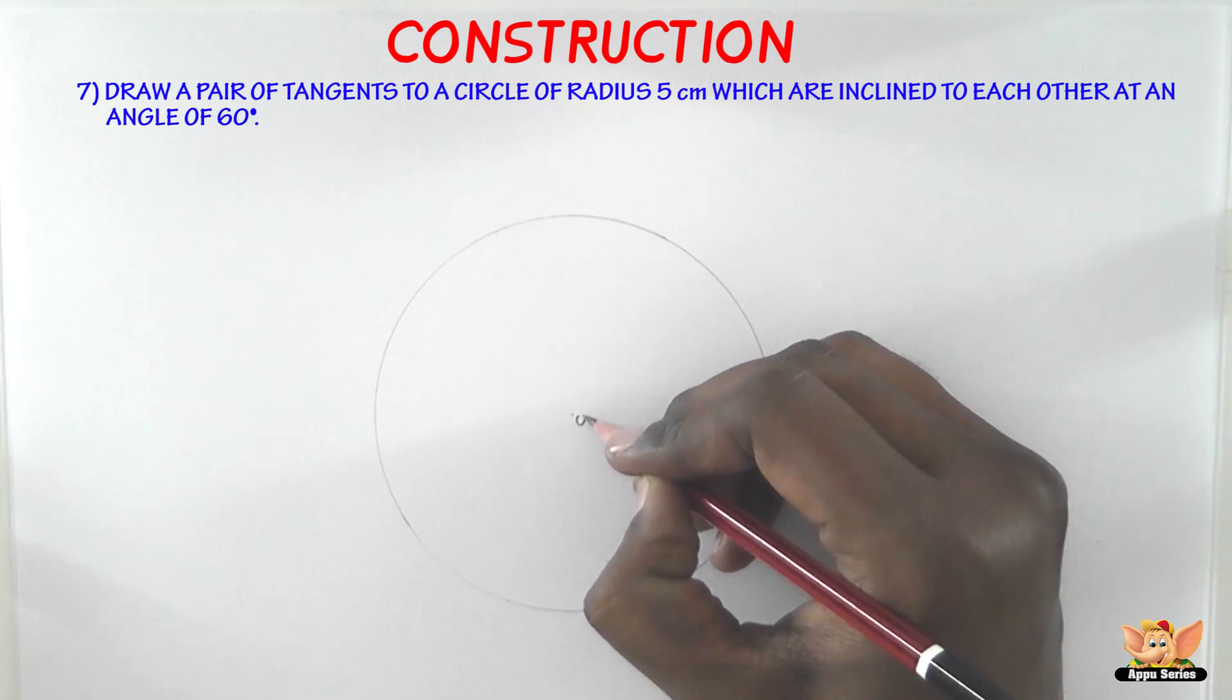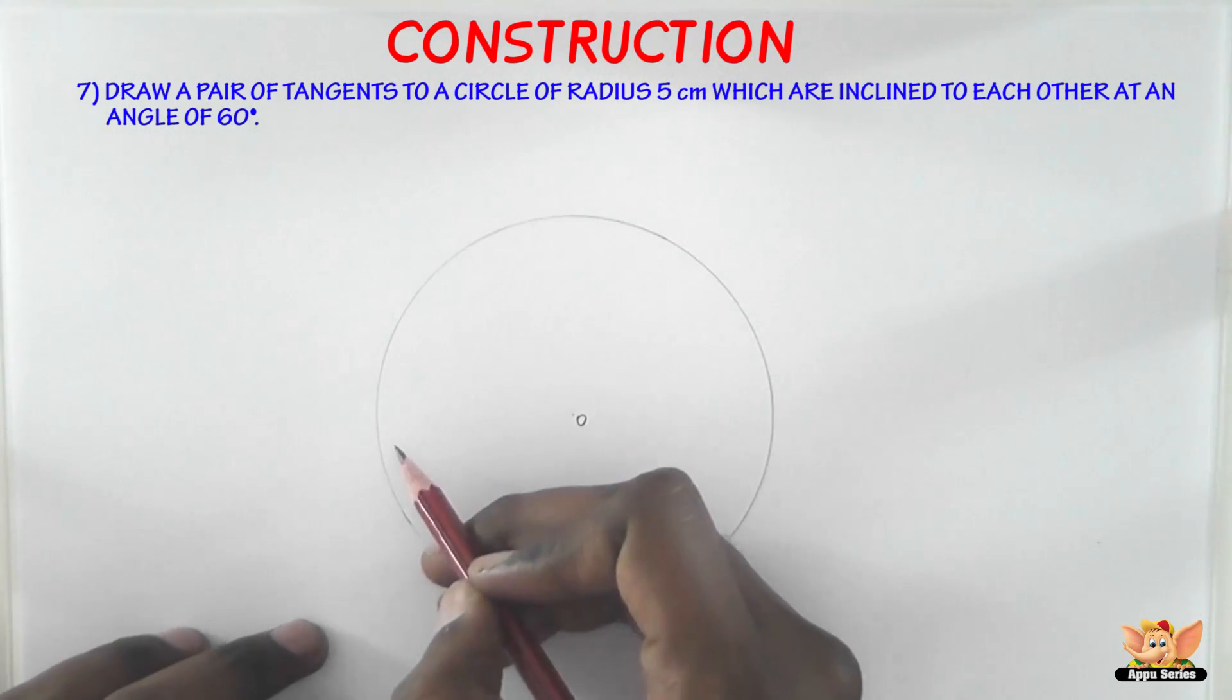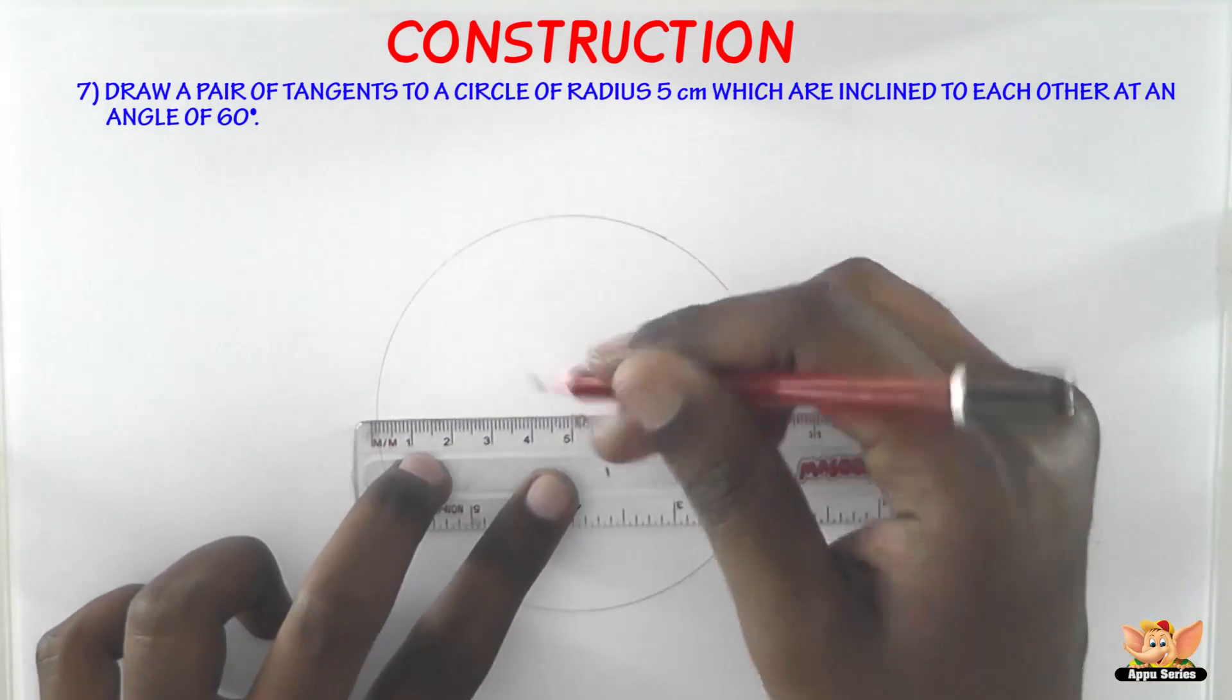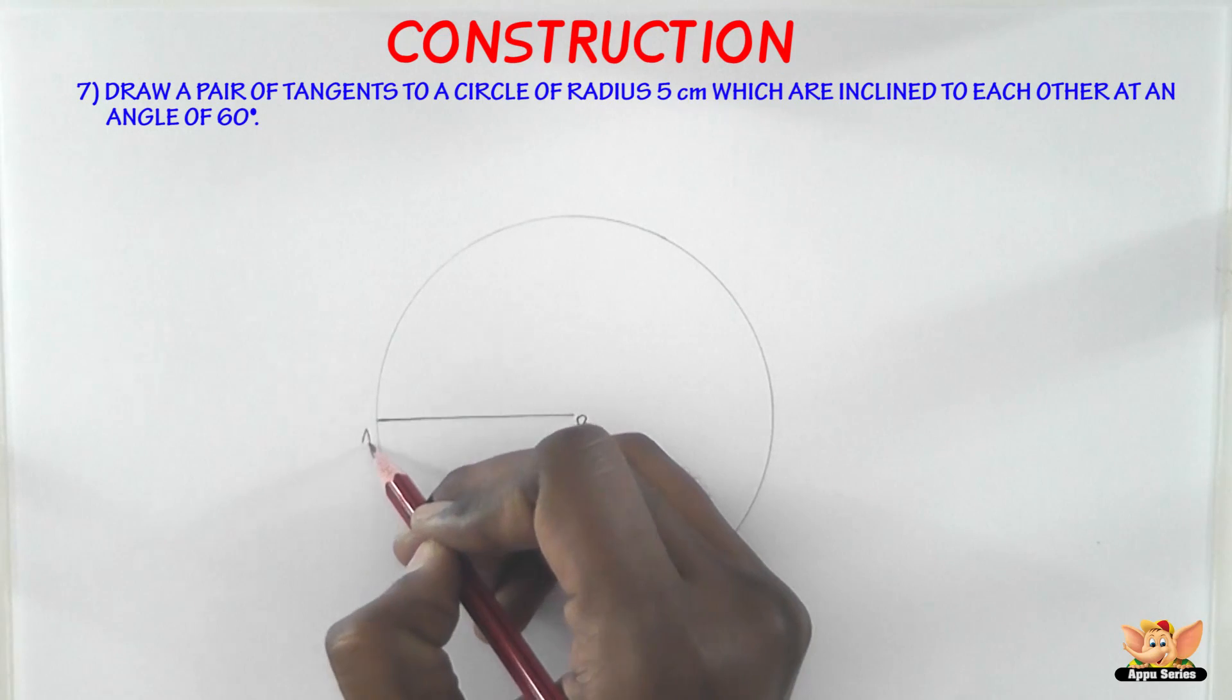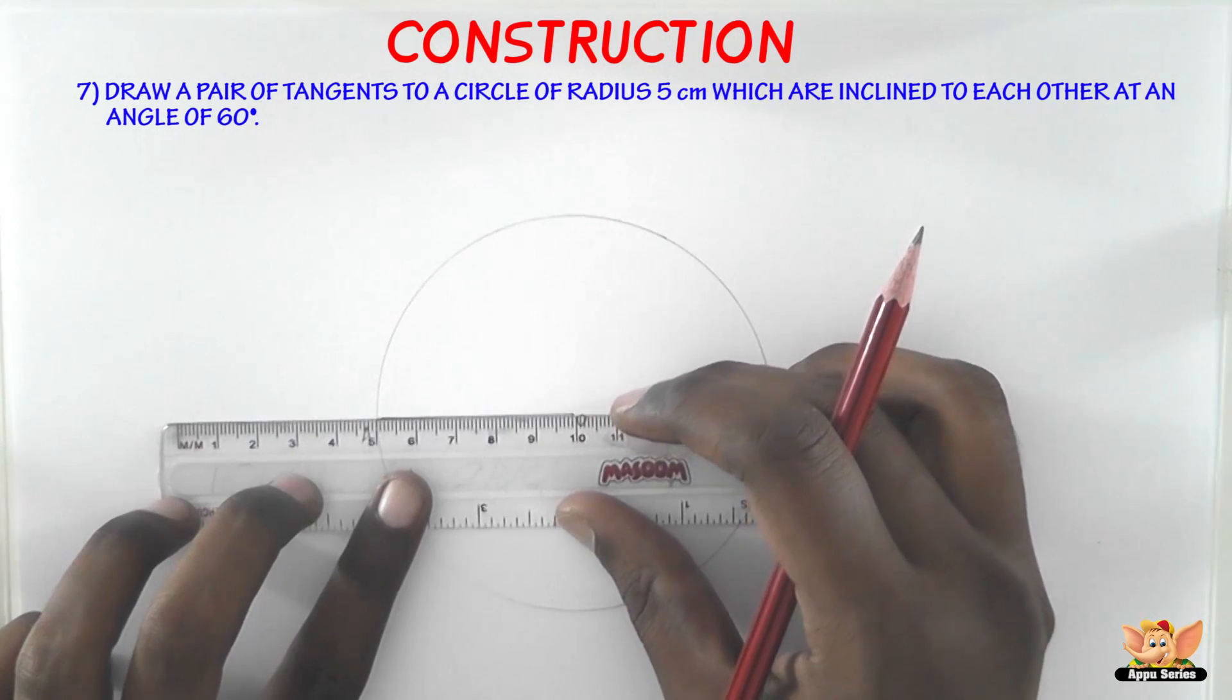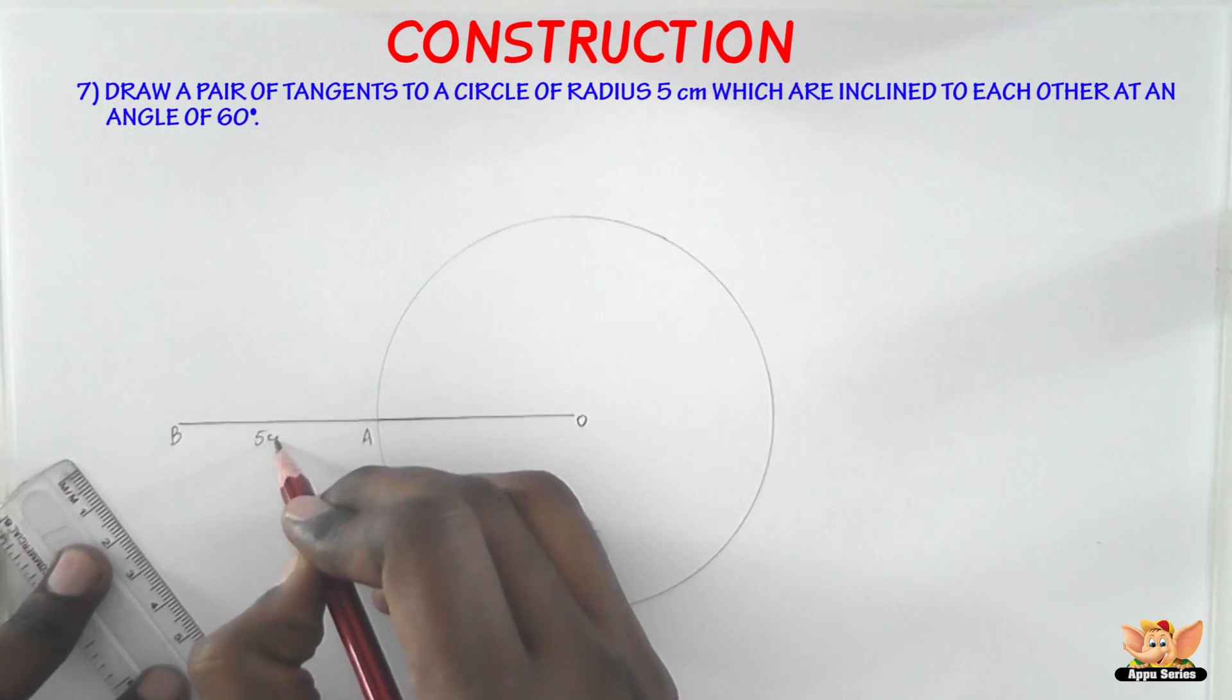This is point O. Now let's draw a line segment. So this is point A. The next step is to produce OA to B such that OA equals AB equals 5 centimeters. So we need to produce this OA to B such that it is equal to 5 centimeters. So here we have B. So AB equals 5 centimeters and OA also equals 5 centimeters.